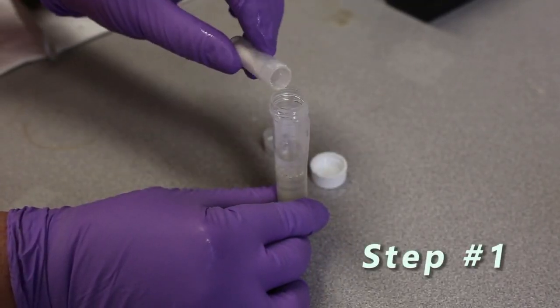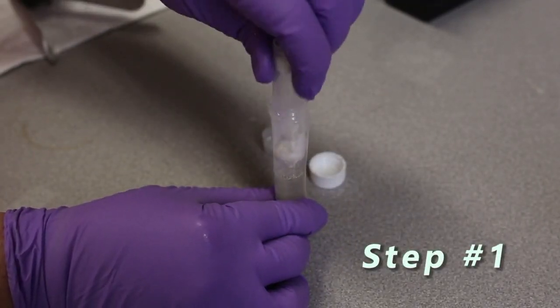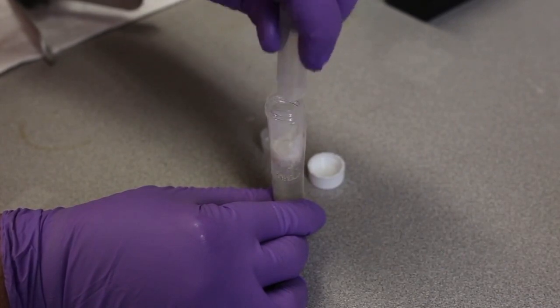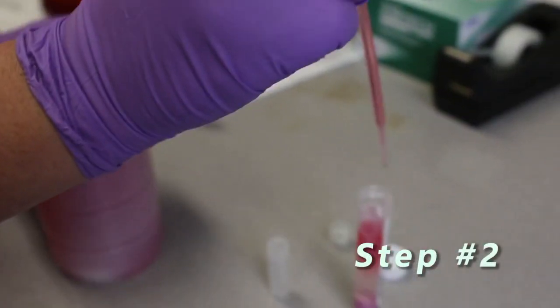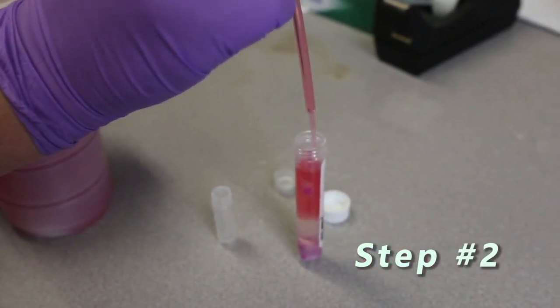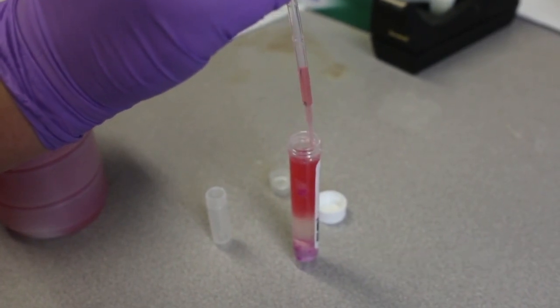Let me show you an example of a water test. Step 1, empty the small tube of dry powder into the 10 milliliter tube. Step 2, fill the 10 milliliter tube with fuel until it's filled to the top of the label.